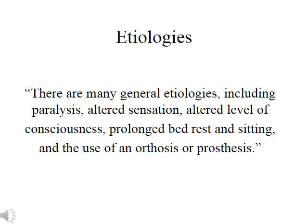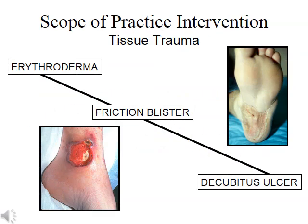Dr. Sanders goes on to say there are many general etiologies, including paralysis, altered sensation, altered level of consciousness, prolonged bed rest and sitting, and the use of an orthosis or prosthesis. In today's orthotic and prosthetic practices, practitioners see a wide range of tissue trauma, ranging from simple redness of the skin or erythroderma all the way to decubitus ulcers of various severities. Wound management is an active component of many O and P practices due to the high incidence of adult onset diabetes.